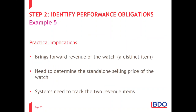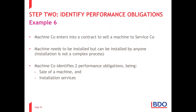Practical implications: if you'd treated it as one performance obligation, you would have recognized revenue evenly over 12 months. Because the watch is a separate performance obligation provided on day one, you recognize revenue for the portion of the transaction price allocated to the watch on day one, and the rest over 12 months. We need to determine the standalone selling price of both the watch and the magazines — that's what we do in step 4, which we'll discuss next month. Also consider: do we have the systems to track two separate revenue items?